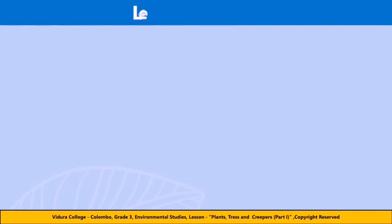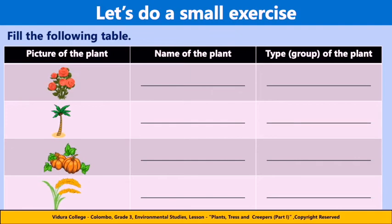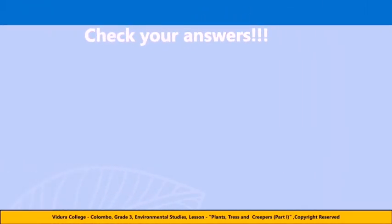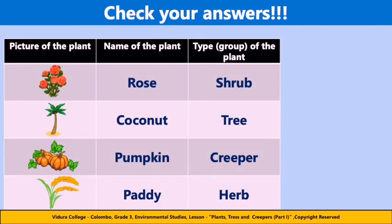Now it's time to do a small exercise. Fill the following table — you have been given pictures of plants, and by looking at the pictures, write the name and the type of each plant. Now check your answers. First picture: the plant is rose and it's a shrub. Second picture: the plant is coconut and it's a tree. Third picture: the plant is pumpkin and it's a creeper. Fourth picture: the plant is paddy and it's a herb. Well done children!